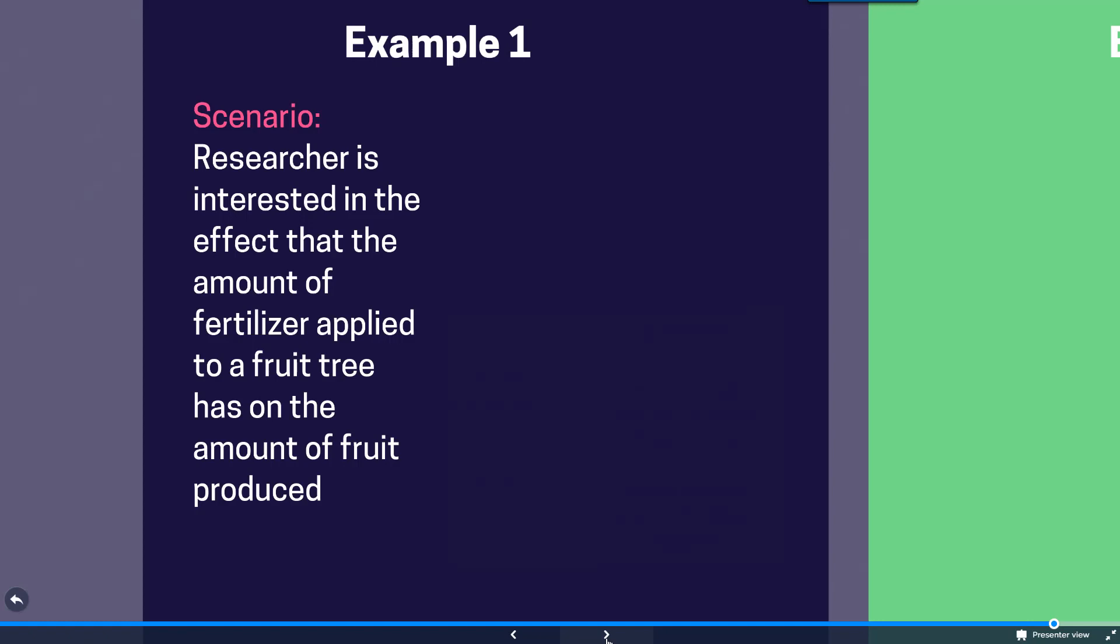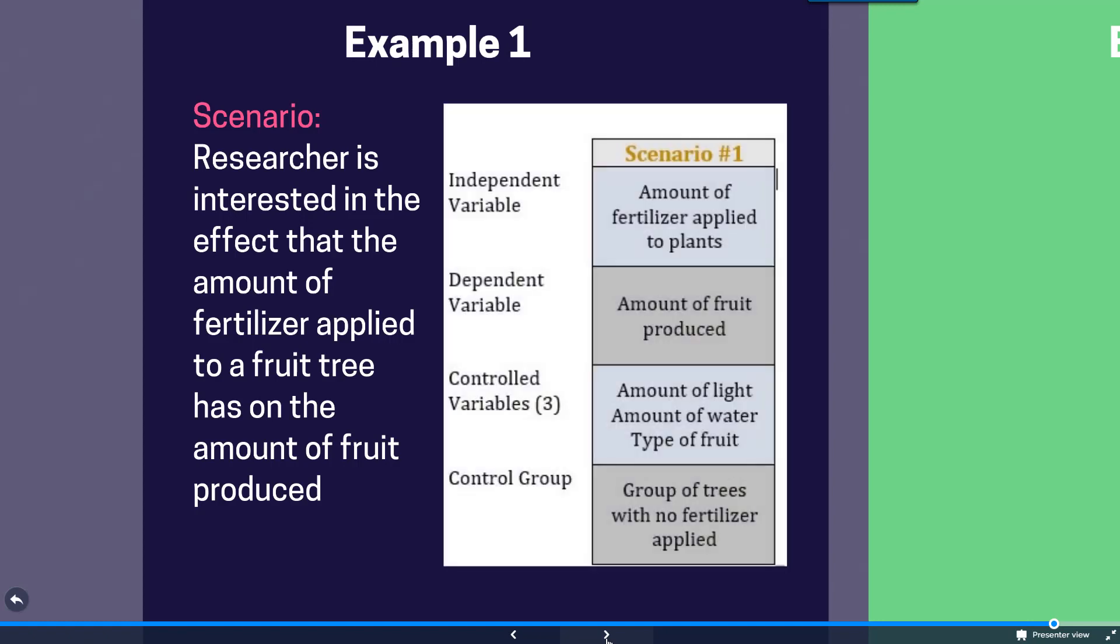All right, so let's take a look at our results here. So an independent variable in this scenario is going to be the amount of fertilizer that was applied to the plants. Dependent variables are going to be the amount of fruit produced. That's what we measure, what we observe. And then the several control variables, although there can be many, are things like the amount of light they're exposed to, all the plants are exposed to, the amount of water, and the type of fruit plant that we're measuring. A control group would be a group of trees with no fertilizer applied.